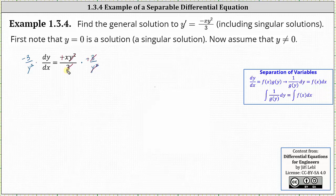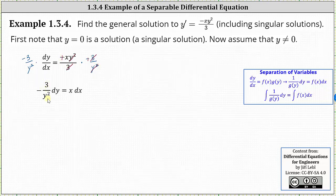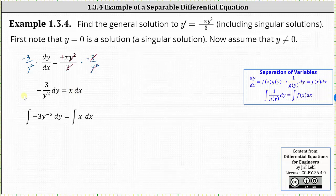Notice the right side is just x now. On the left, we have negative three divided by y squared times dy/dx. The last thing to do is move the dx to the right side, so we multiply both sides of the equation by dx, which gives us negative three divided by y squared dy equals x dx. Now that we have the y's on the left and the x's on the right, we integrate both sides of the equation.